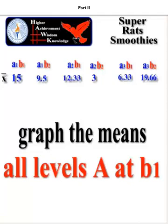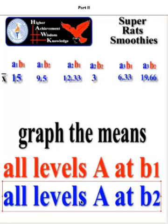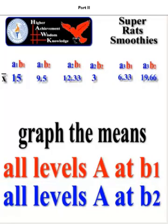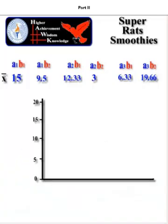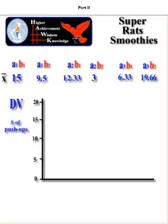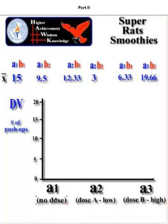We need to graph all the levels of A — that's A1, A2, A3 at B1, which will be one separate line. The next line is going to be all levels of A at B2, so we'll have two separate lines on a graph. We set up our graph and try to make the scale — the top number — whatever the largest mean is, make it a little bit bigger so it'll fit. Your y-axis is always going to be your DV, and in our case it's the number of rat push-ups. Along the bottom, the x-axis, we put the different factor levels of A — the dosage of the drug.